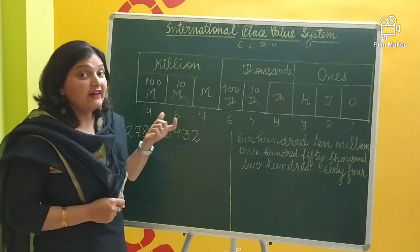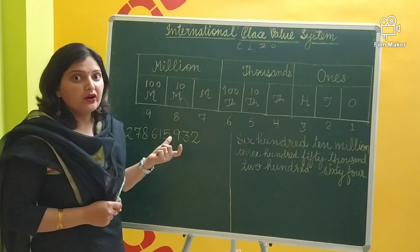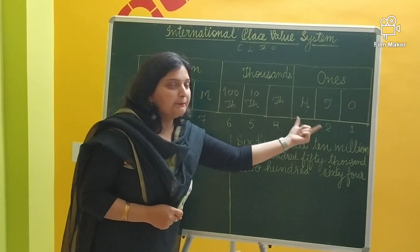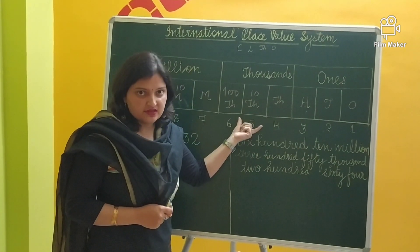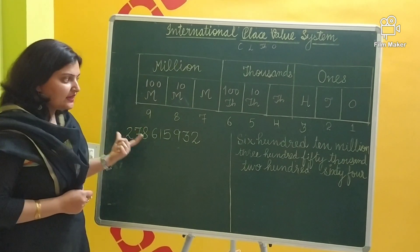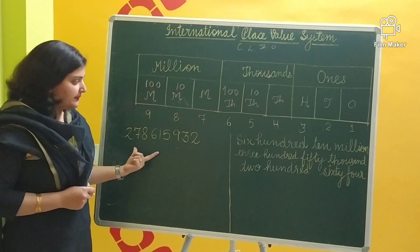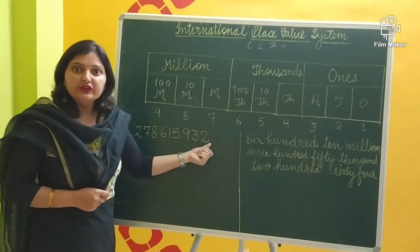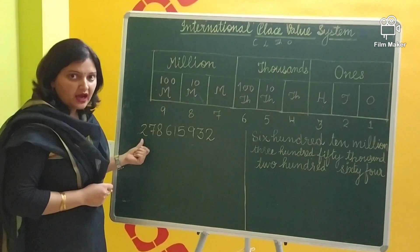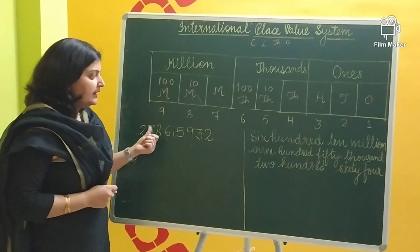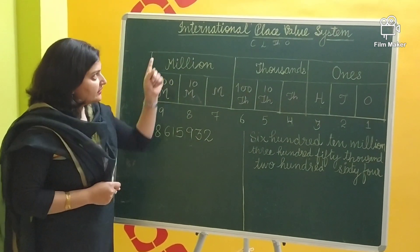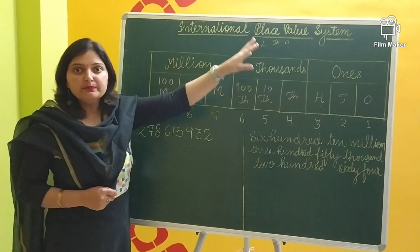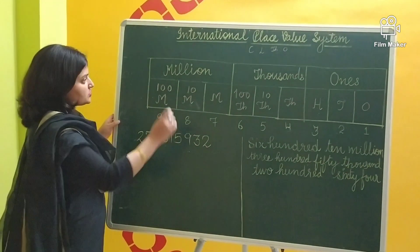Now, we know where to apply commas — we always apply commas when a period changes. So let us take one example. I am taking a 9-digit number and we want to apply commas following the international place value system.